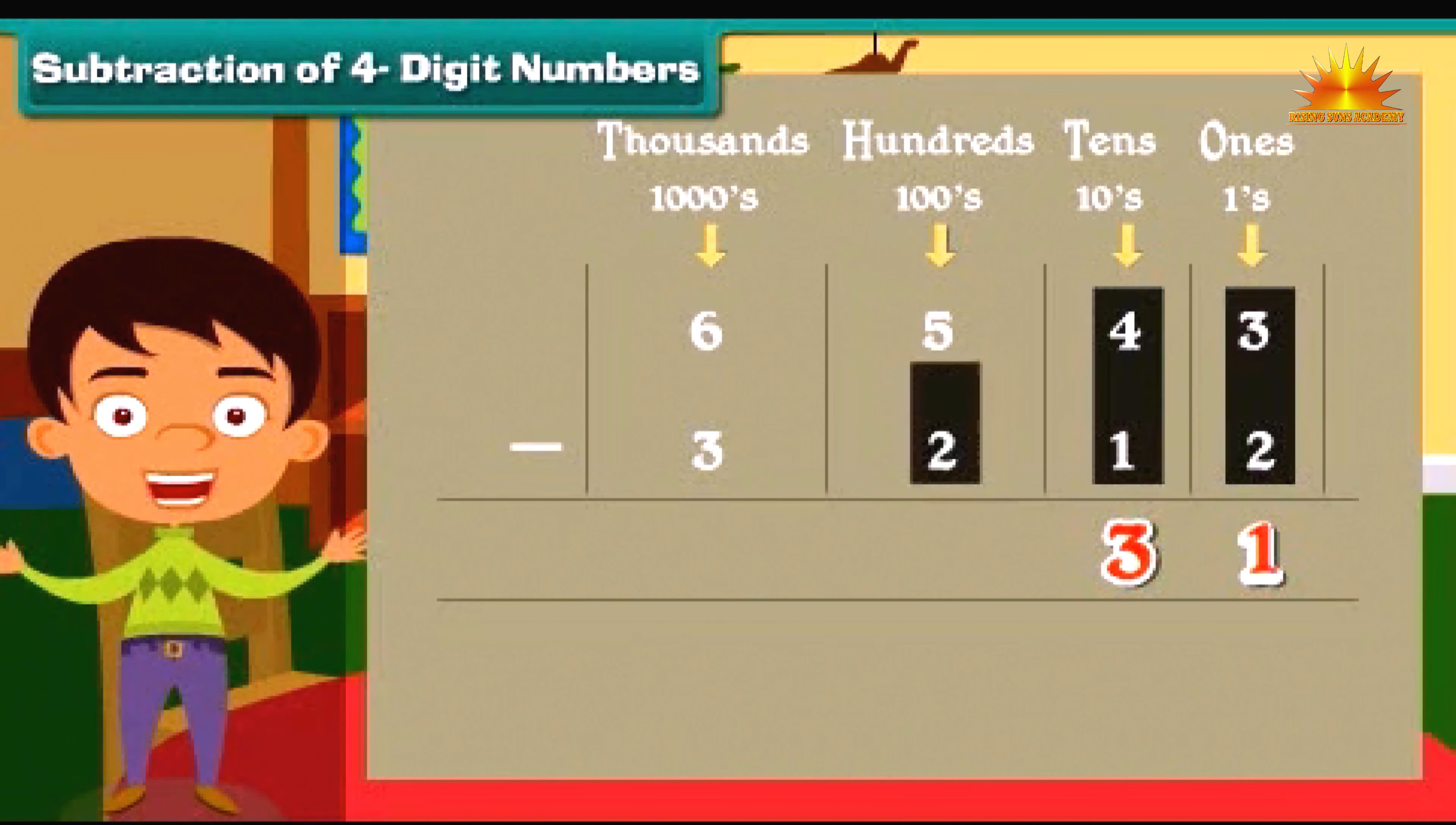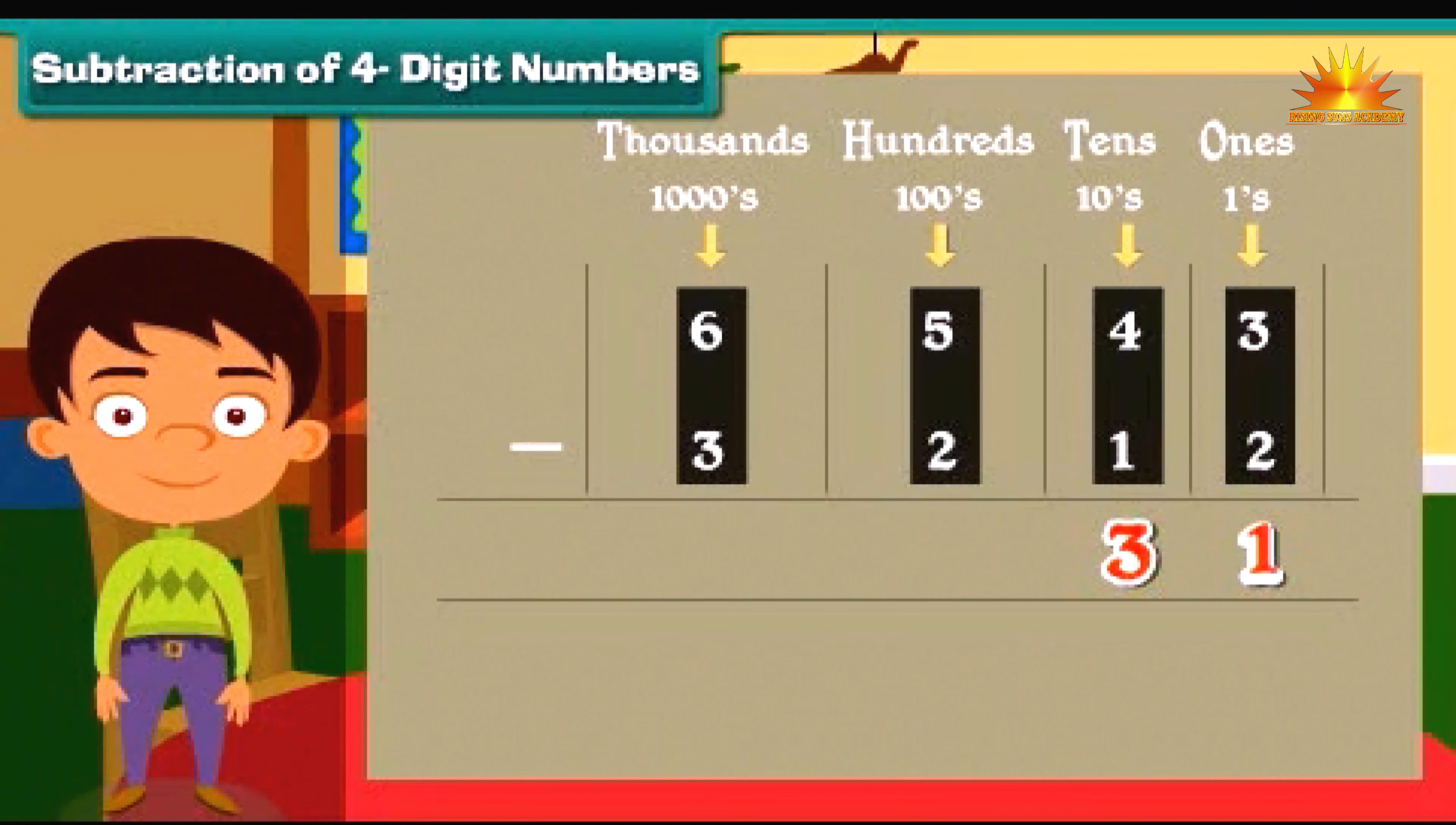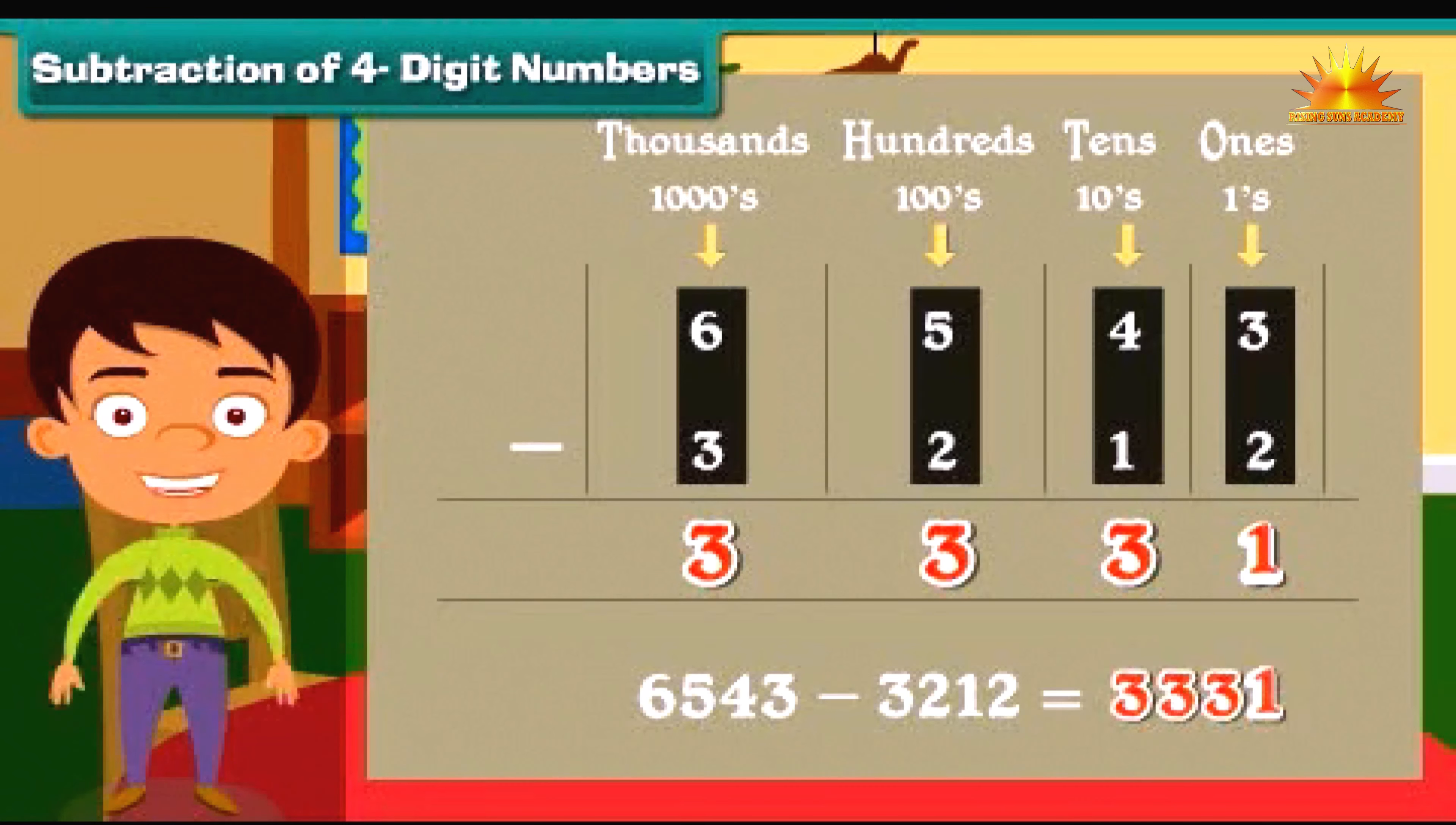Similarly, subtract hundreds and thousands. Five minus two is three, and six minus three is three. So 6543 minus 3212 is 3331.